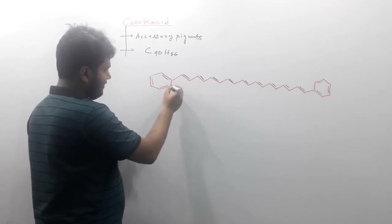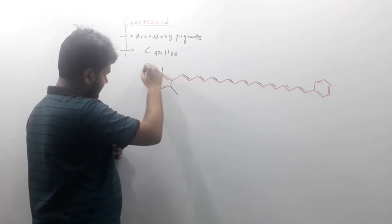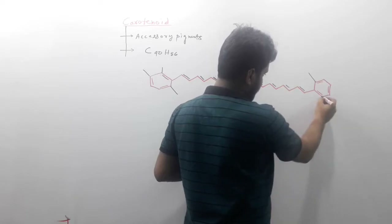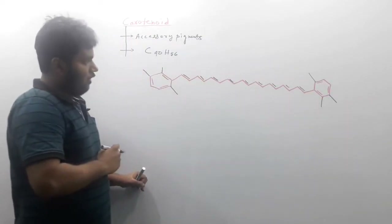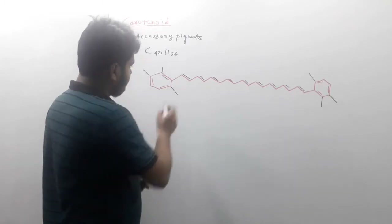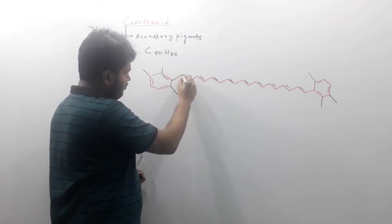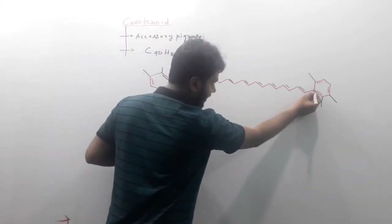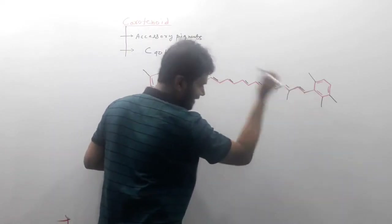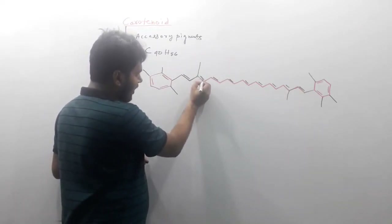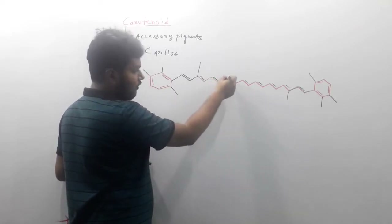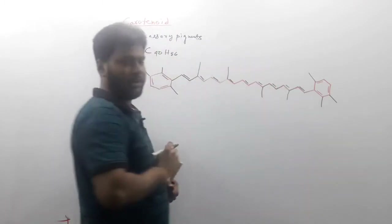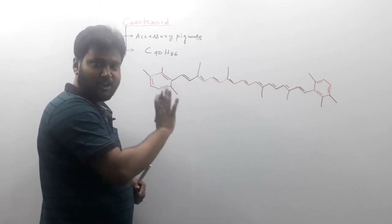Along the chain, there will be methyl group side chains at multiple positions — one here, one here, one here, and so on. Four side chains in total, each being a methyl group. This is the general structure of carotenoid.